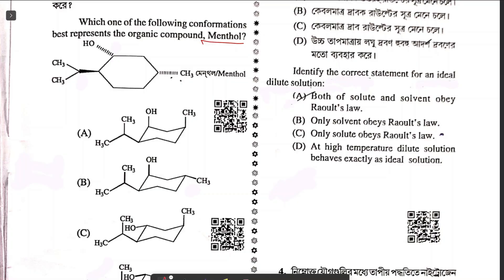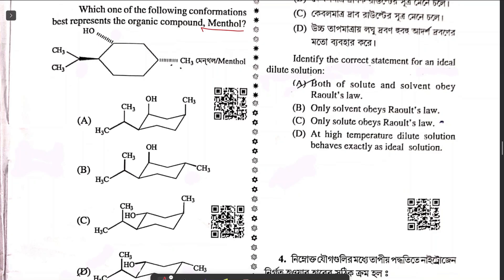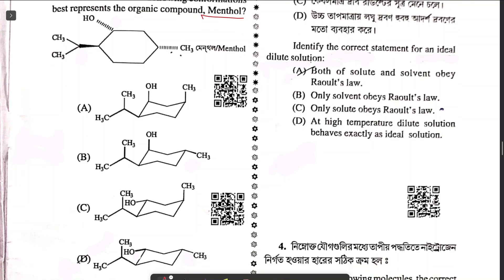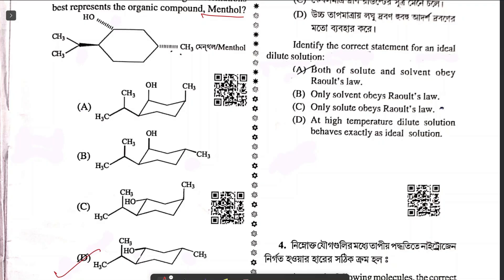Question number one asks which conformation best represents the organic compound menthol. They have written it in cyclohexane conformation and want the answer in chair conformation. The answer is option D. OH and CH3 are in cis position, and the isopropyl group is trans with respect to the OH and CH3 group.